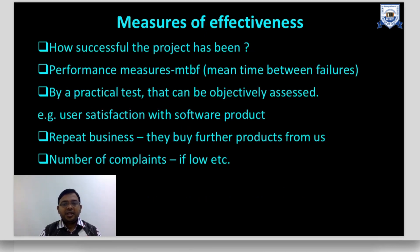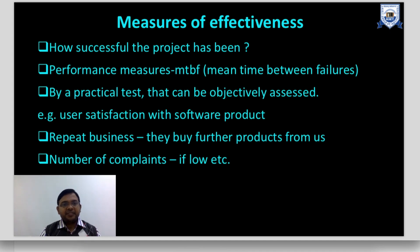How can you say your objective is achieved? Performance measures — for example, the failure rate or mean time between failures assessed through practical tests, user satisfaction, repeat business (whether the client gives you orders repeatedly), and the number of complaints. These are the measures by which you can check whether your project has been successfully achieved.